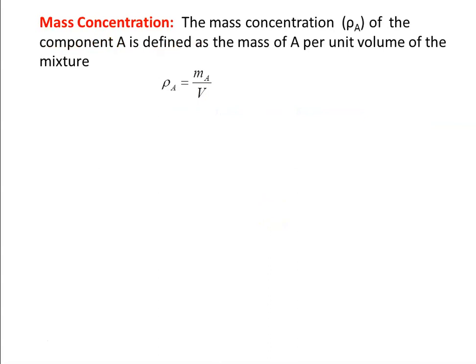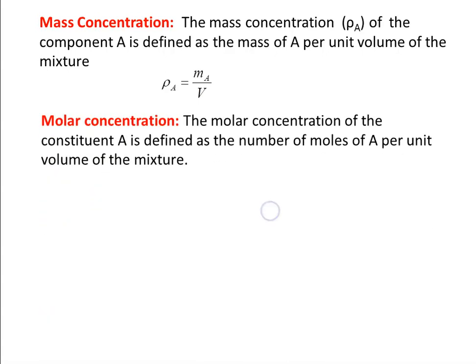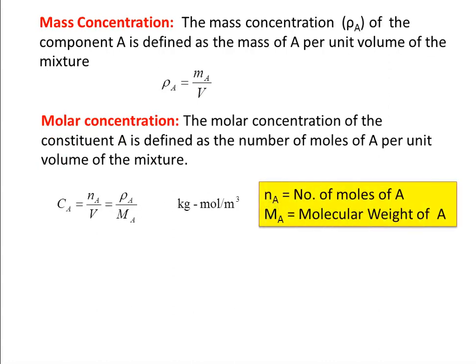We discuss various definitions. First, mass concentration: the mass concentration ρ_A of component A is defined as the mass of A per unit volume of the mixture — it is essentially density, where density of A equals mass of A divided by total volume of the mixture. And molar concentration C_A is defined as the number of moles of A per unit volume of the mixture: C_A equals number of moles of A divided by volume, which also equals ρ_A divided by M_A, where M_A is the molecular weight of component A.